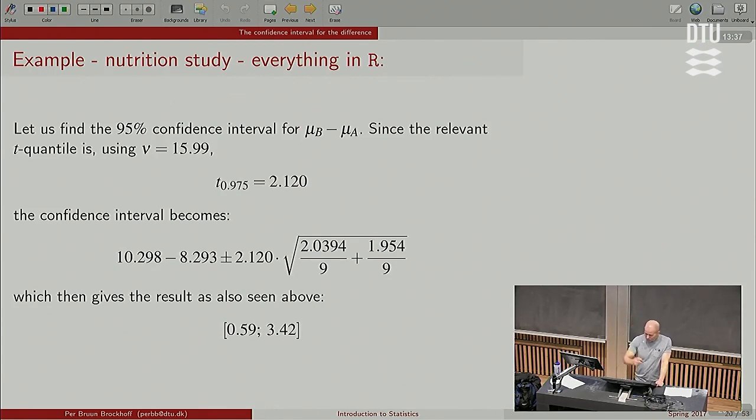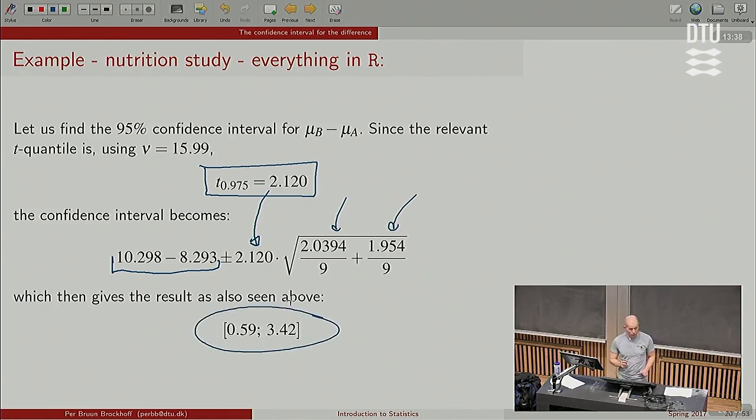Example. We could find the critical value with 16 degrees of freedom, and in a sec I'll go into R and do it. Then we could compute the confidence interval by taking the two means once again. This was the approximate two number for the difference of two means. I look up the t number, that is the other approximate two number from the t distribution, and I plug in the two variances and the n's and I get the result I already showed you on slide 2, 35 minutes ago.